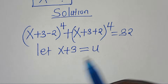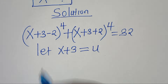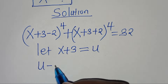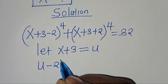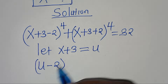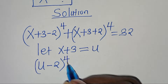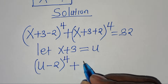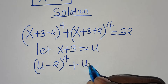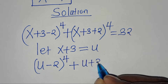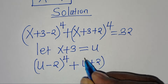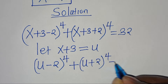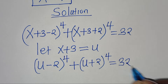Let's substitute u where we have x + 3, so that we have (u minus 2) raised to the power of 4, then plus (u plus 2) raised to the power of 4. This is equal to 32.